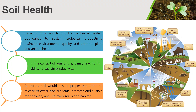Soil fertility is a dynamic domain of soils because it can be changed and managed due to the influence of farming practices, climatic conditions, and application of manures, green manures, fertilizers, and bio-fertilizers. Other important factors which can influence soil fertility include soil texture, soil structure, soil pH, soil organic matter, soil moisture, and soil organisms. In the context of agriculture, it may refer to its ability to sustain productivity. A healthy soil would ensure proper retention and release of water and nutrients, promote and sustain root growth, and maintain soil biotic habitat.